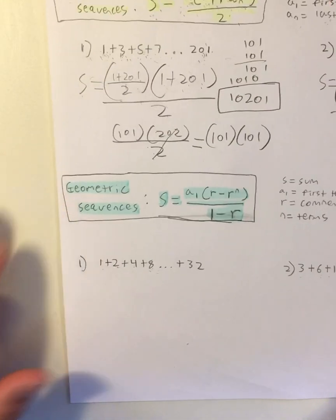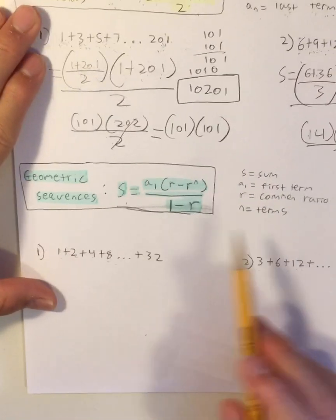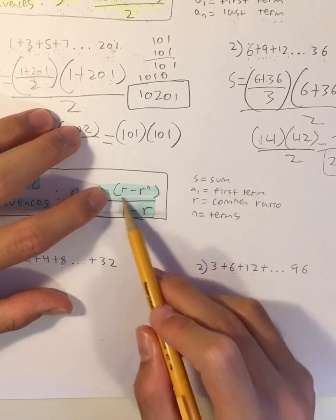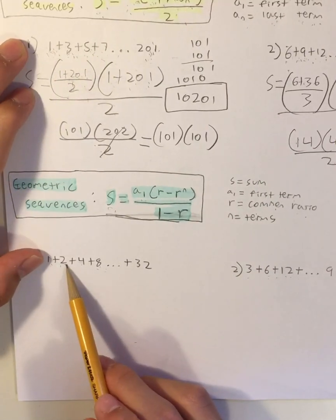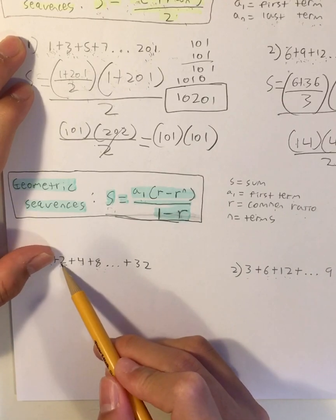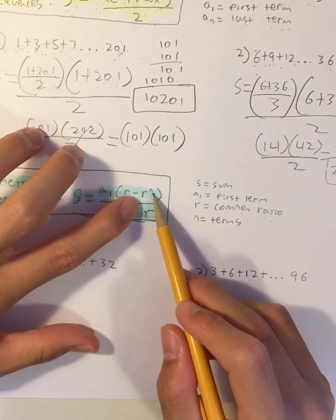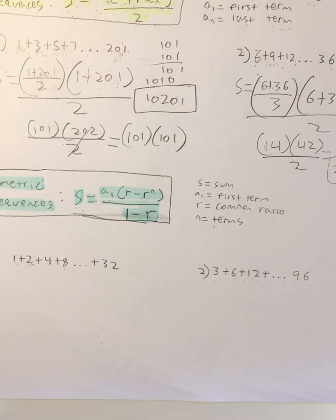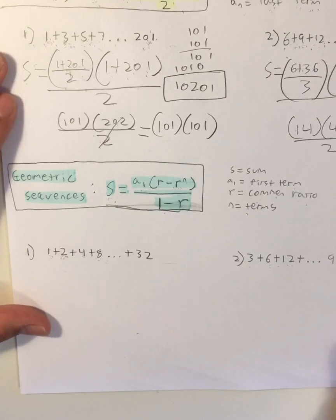Now let's move on to geometric sequences. This concept is a little harder to grasp, but let me try my best to explain it. To find the sum of a geometric sequence, you first multiply the first term A1 by the ratio R — the common ratio is how much you multiply each number by to get the next value. In this case, 1 times 2 is 2, 2 times 2 is 4, 4 times 2 is 8, so the common ratio is 2. Then minus R to the N power over 1 minus the common ratio. So let's get into this problem and apply this formula.